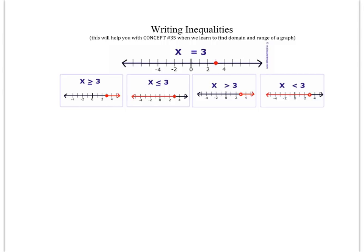Now if I were writing this as a domain, I would write it as 'x such that' and put it in set notation. The next case: a closed dot on 3 but shaded to the left means all numbers less than 3, so x is less than or equal to 3. As a domain it might be written as: x such that x is less than or equal to 3.